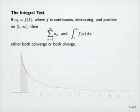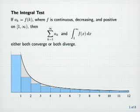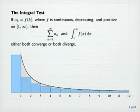Now let's try to understand why this is true. Suppose this is the graph of f. Let's draw a rectangle with height f of k over each sub-interval from k minus 1 to k, where k is 1, 2, 3, 4, and so on. Then we can think of a sub k as the area of the kth rectangle, and we can think of the sum from k equals 1 to infinity of a sub k as the total area of all of these rectangles.